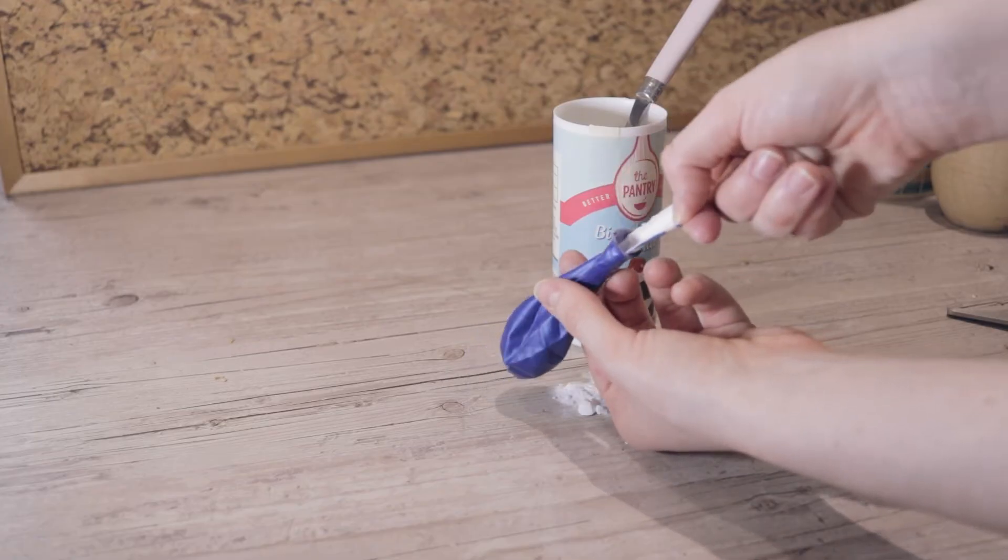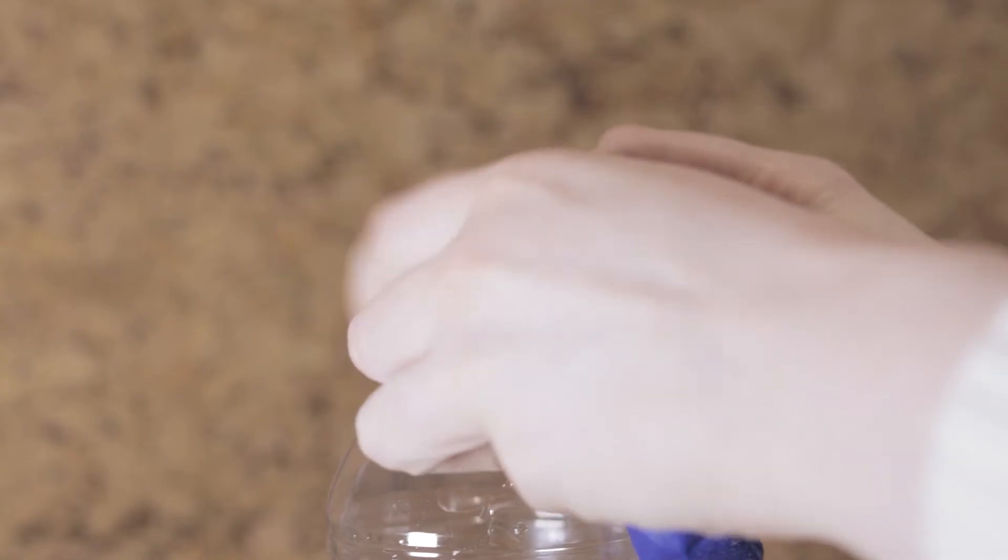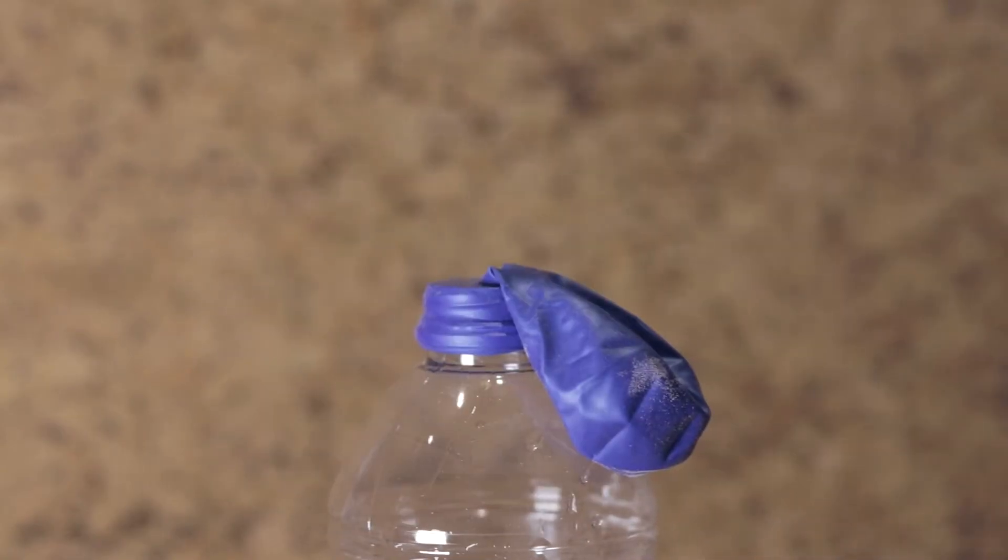Make sure all the baking soda goes to the bottom of the balloon. Then stretch the lip of the balloon over the bottle so it fits tightly, taking care not to get any bicarbonate of soda in the bottle at this stage.